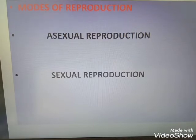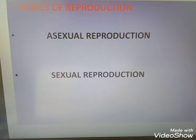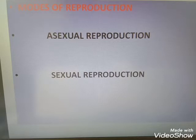The mode of reproduction is mainly of two types: asexual reproduction and sexual reproduction. In asexual reproduction, only one individual participates and there is no formation or fusion of gametes — only one parent is involved. In sexual reproduction, two parents are required and they produce gametes; formation and fusion of gametes occurs.